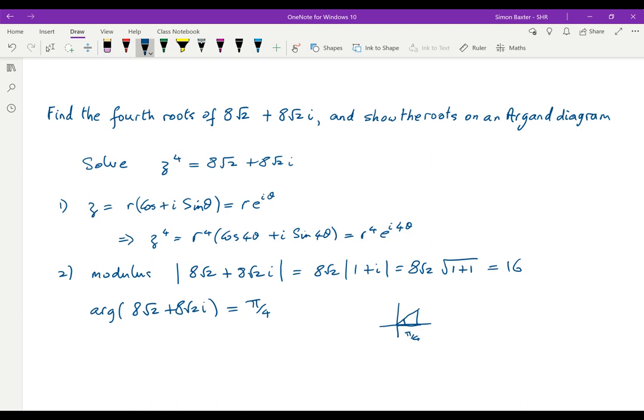This tells us that we can write 8√2 + 8√2i as 16(cos π/4 + i sin π/4).